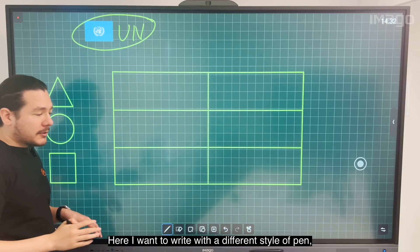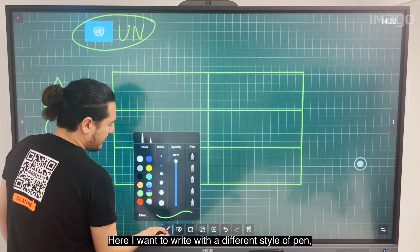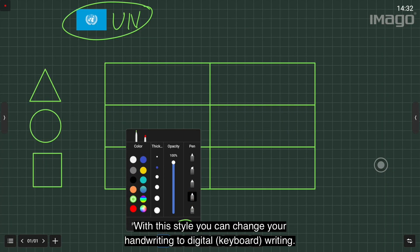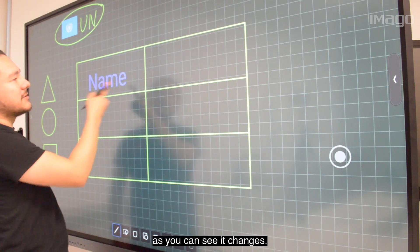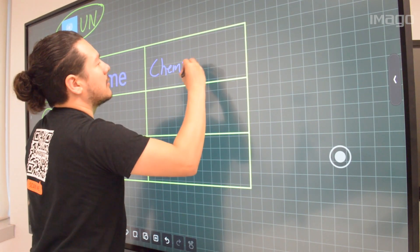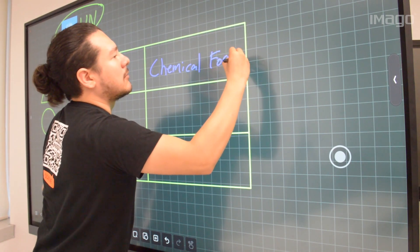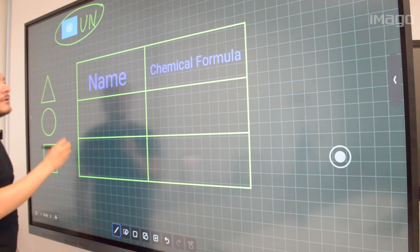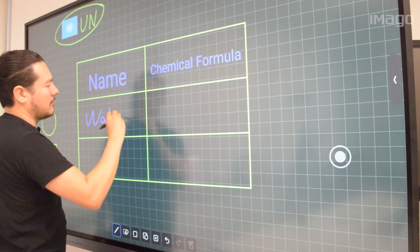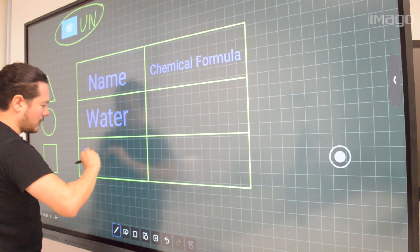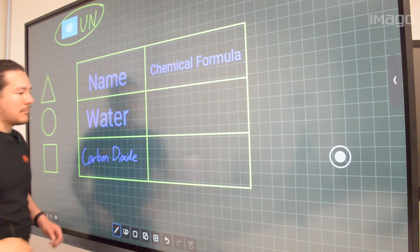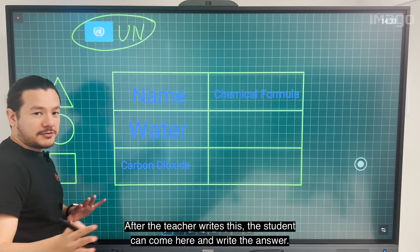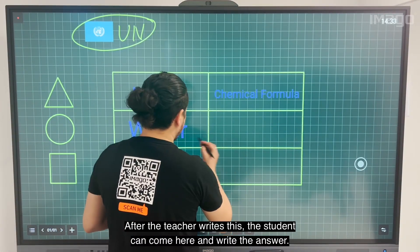Here I want to write with a different style of pen, this one with the 'T'. With these styles you can change your handwriting to digital writing. For example, 'Name' - as you can see it changes. After the teacher writes this, a student can come here and write the answers.